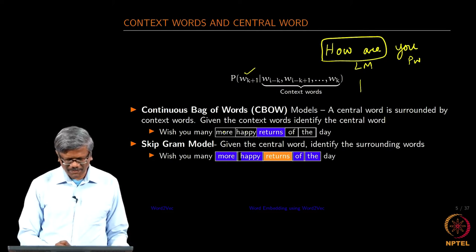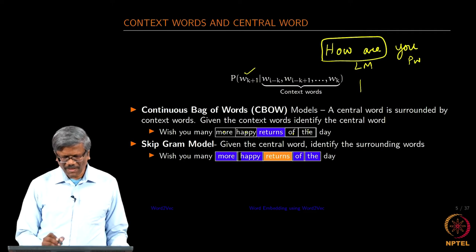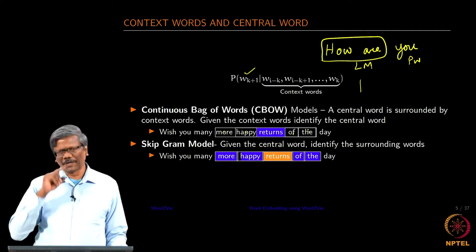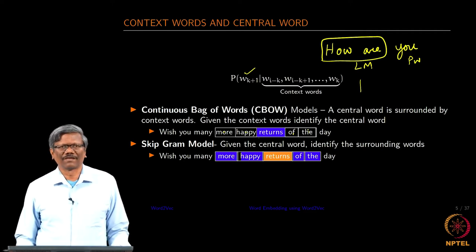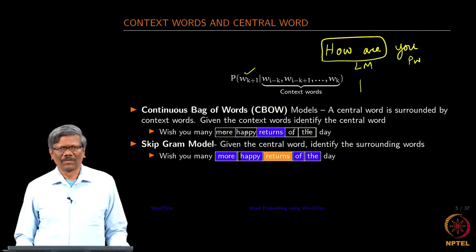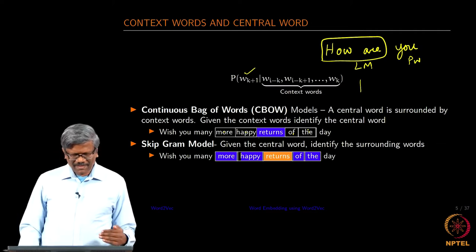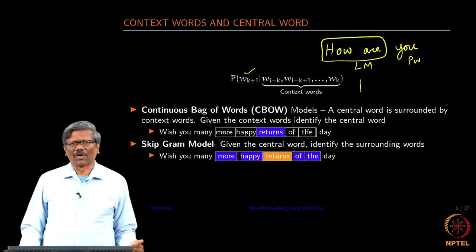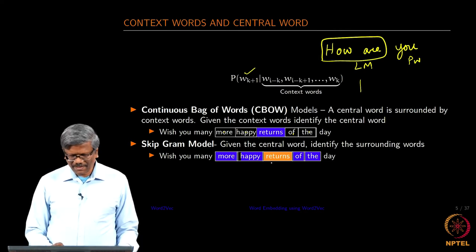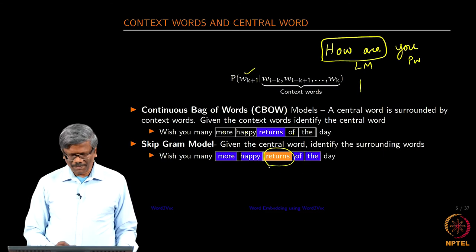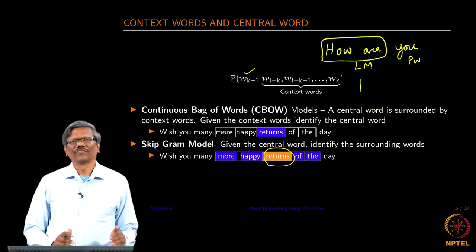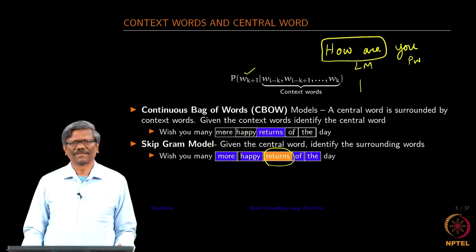Given those context words, I want to be able to find out what my central word is. In the case of the skip-gram model, given the central word, I want to be able to predict the context words surrounding the central word.